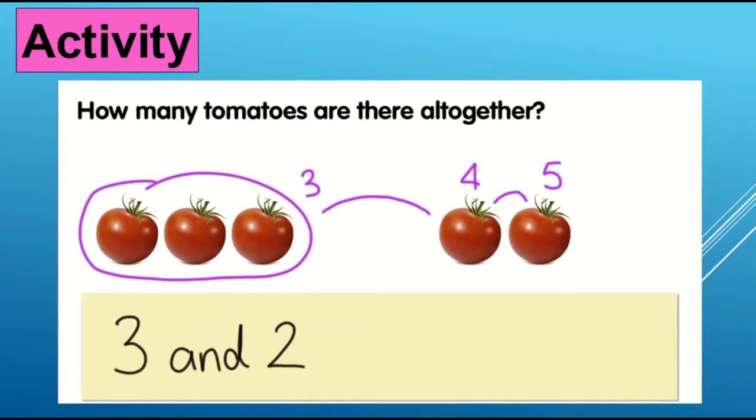Now I have an activity 2. How many tomatoes are there all together? Let's count with me. How many tomatoes are here? 1, 2, 3. So 3. Then how many tomatoes are next? 4, 5. Very good. Like this you will count 3 and 2 equals 5. Very good.